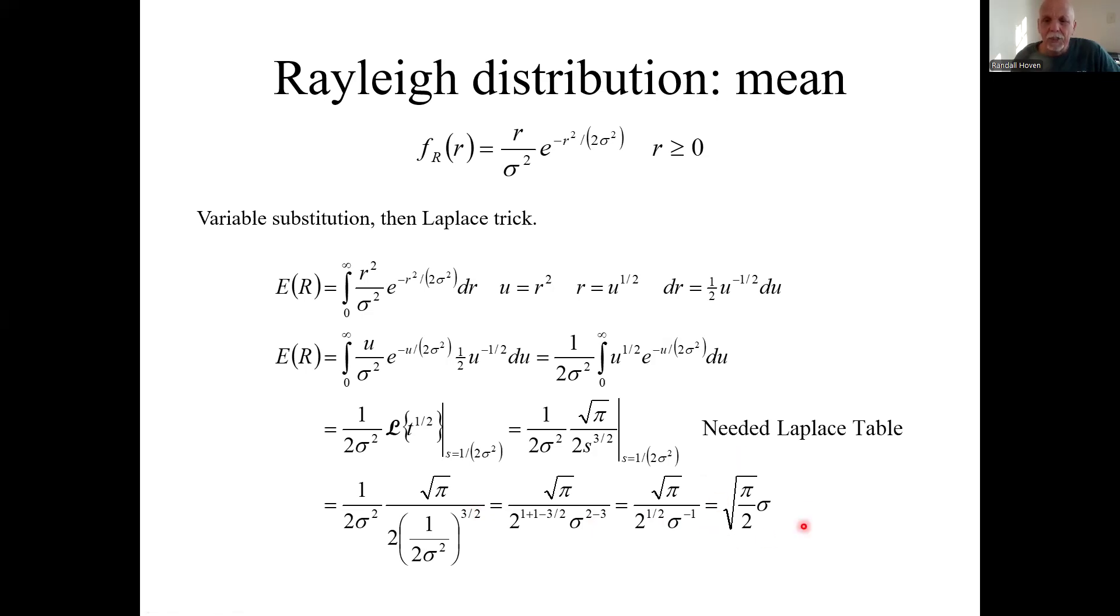But anyway, here's the mean. Square root of pi over two times this sigma. This sigma, by the way, is not the standard deviation of this random variable.